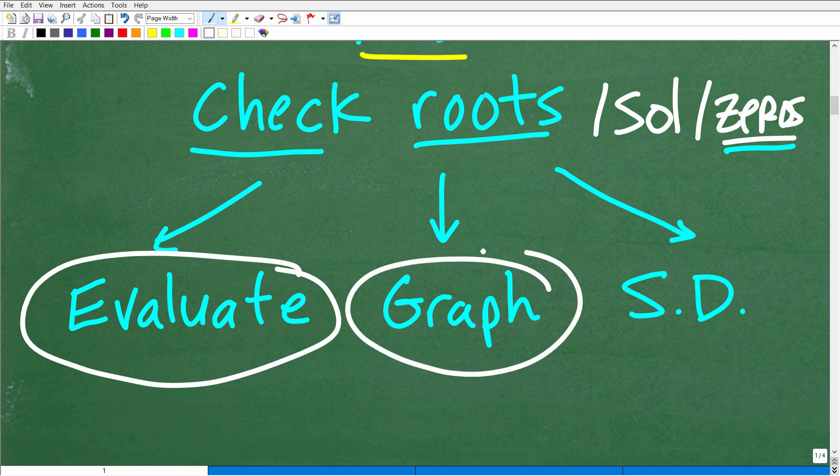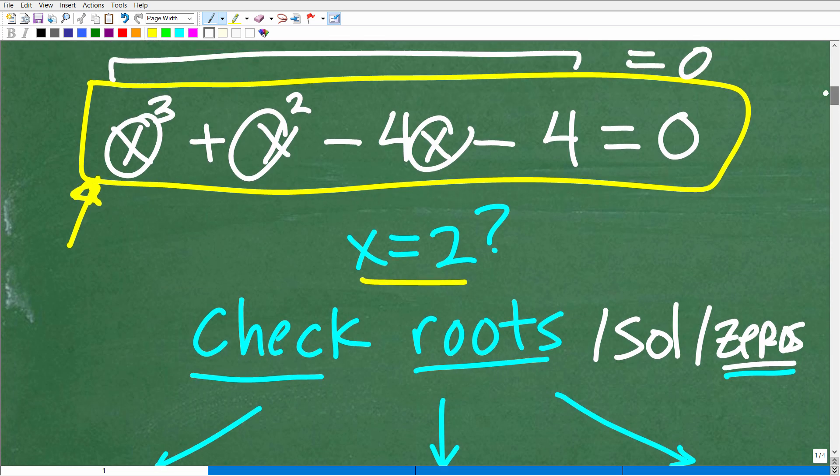So the first way you could do that is to evaluate that particular root. In other words, you could just plug this in, this number 2, in for these x's right here, and then clean up this side and see if it's equal to 0 in this particular case. So just like when you check a solution in any equation, if you plug it in and the left equals the right in terms of its value, well, then, in fact, you've got a valid solution.